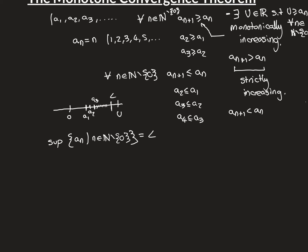This relies on the sequence being monotonically increasing. For a sequence that isn't monotonically increasing, you can still find the supremum of its terms, but the sequence won't necessarily converge to that value. As a counterexample, the harmonic sequence 1/n gives 1, 1/2, 1/3, etc. The supremum of its terms is 1, but the sequence converges to 0, not 1. So monotonicity is essential for saying the limit equals the supremum.